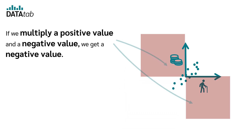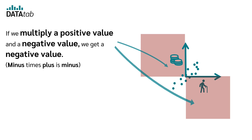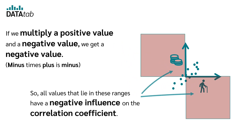If we multiply a positive value and a negative value, we get a negative value — minus times plus is minus. So all values that lie in these ranges have a negative influence on the correlation coefficient.